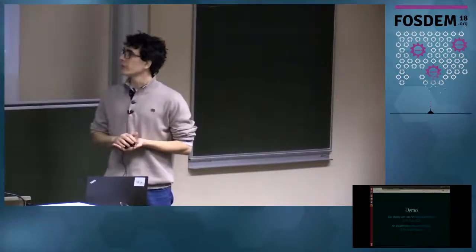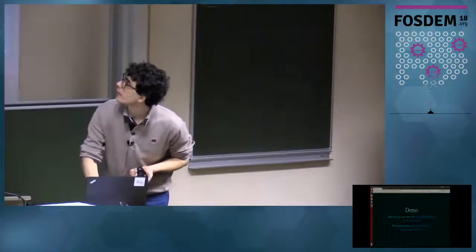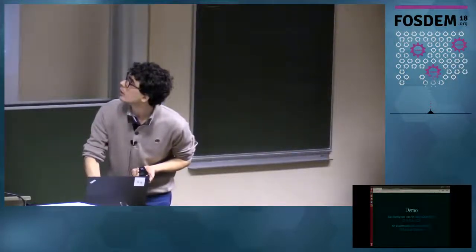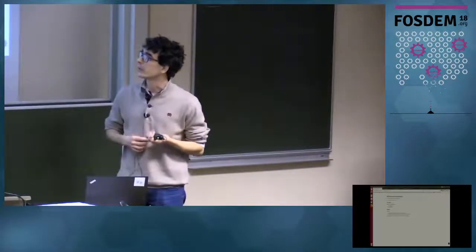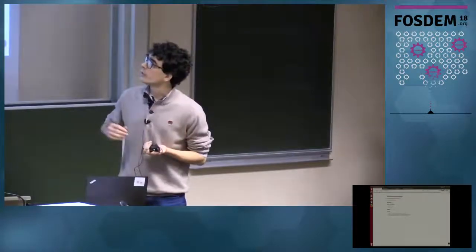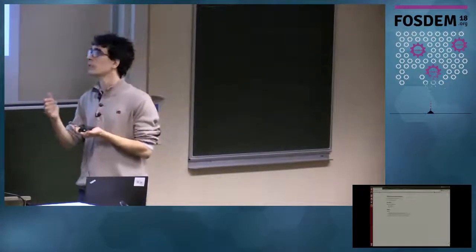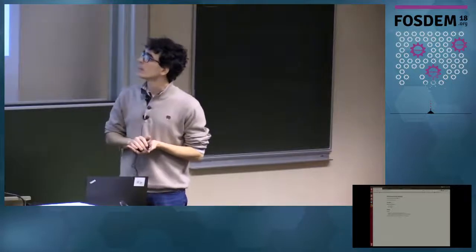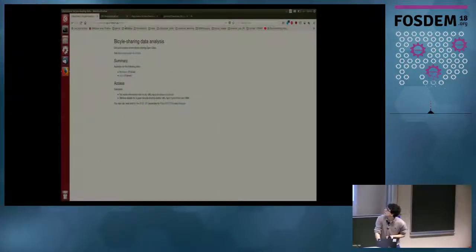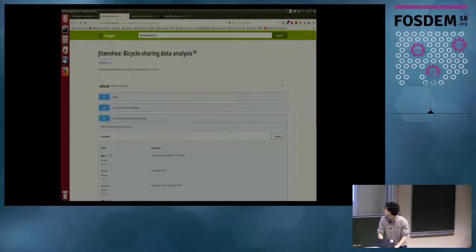To finish the presentation, I can show you a little demo of our API — it's live on the internet. This API has been developed with Flask, so it's a REST API. We have the two cities, Bordeaux and Lyon. We can imagine gathering more data from more cities to add them to the API. There is a project on GitHub and there is a documentation — more a way to get data in JSON format.